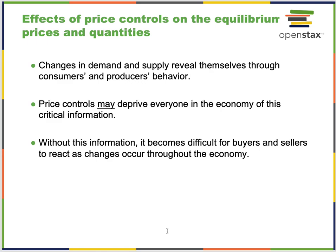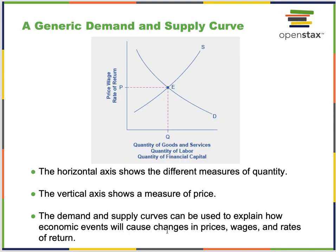Changes in demand and supply reveal themselves through consumers' and producers' behaviors. Price controls may deprive everyone in the economy of this critical information. Without it, it becomes incredibly difficult for buyers and sellers to react to changes occurring throughout the economy — the whole point of a market system is to let markets find their own price, supply, and demand equilibrium.